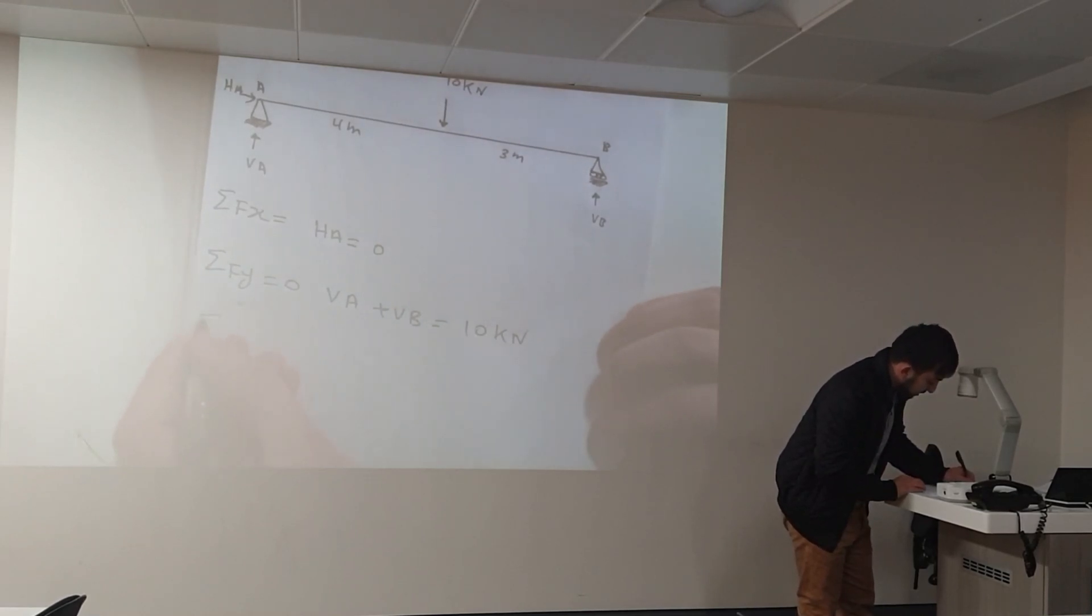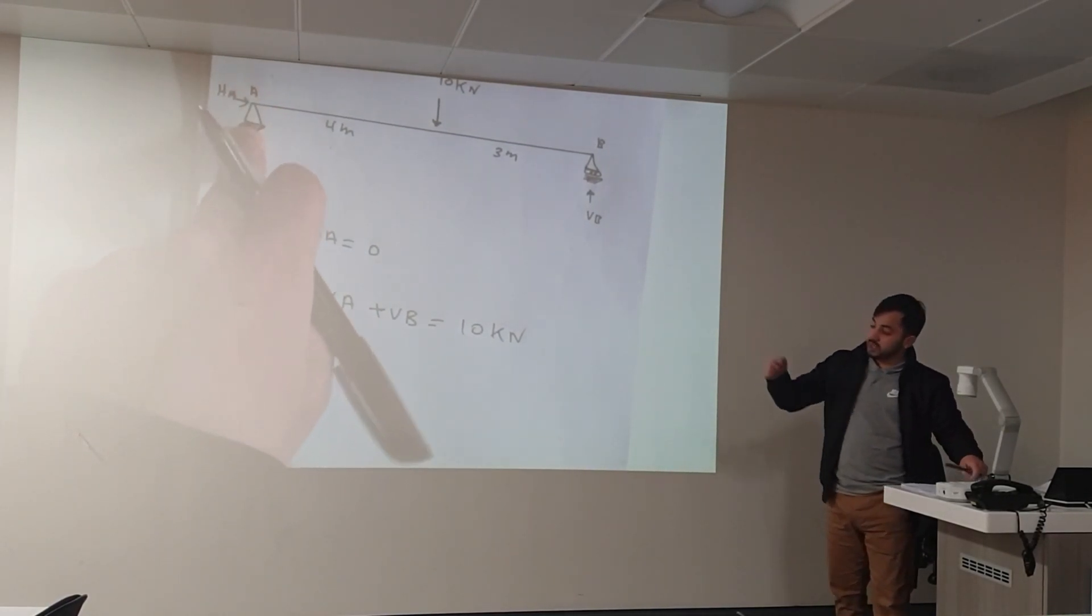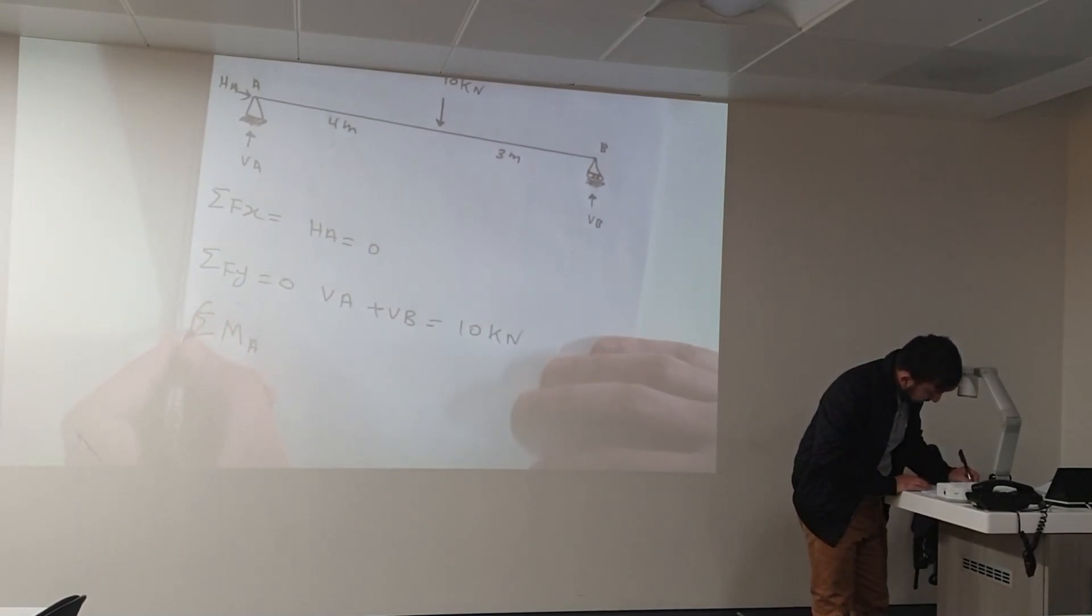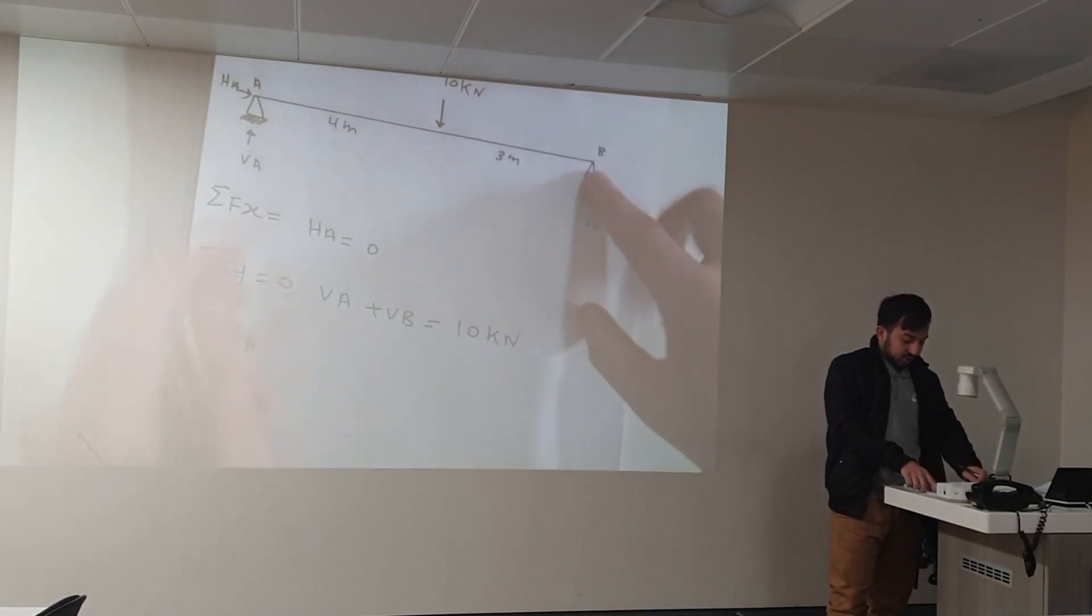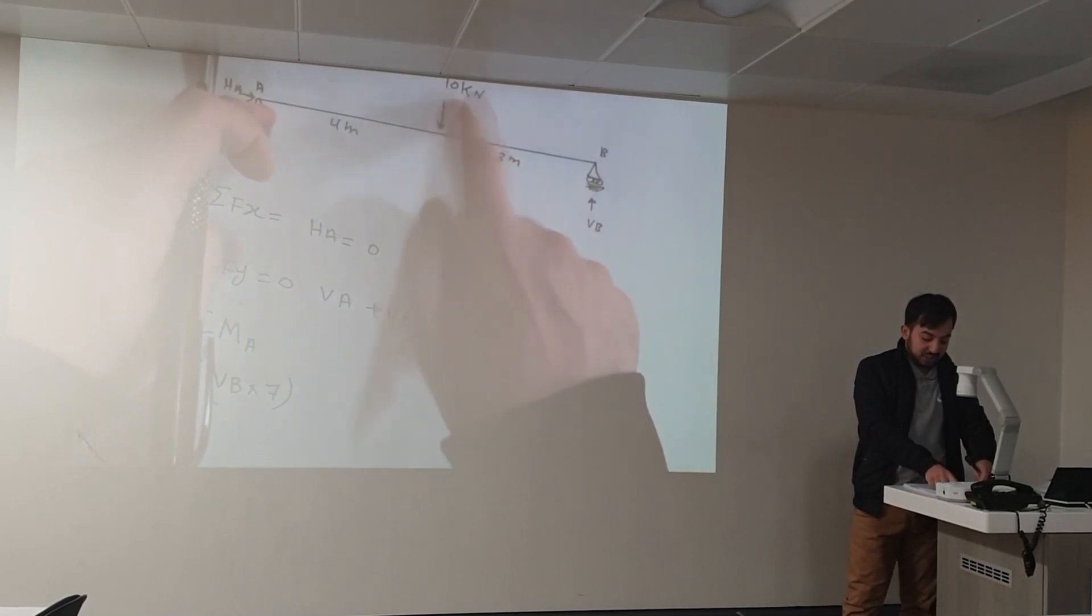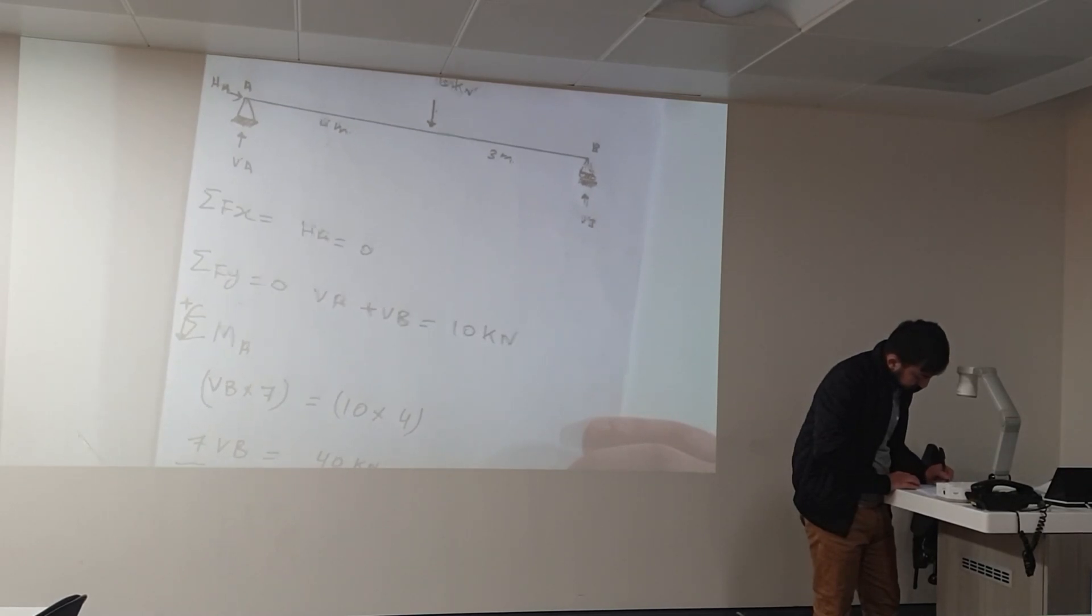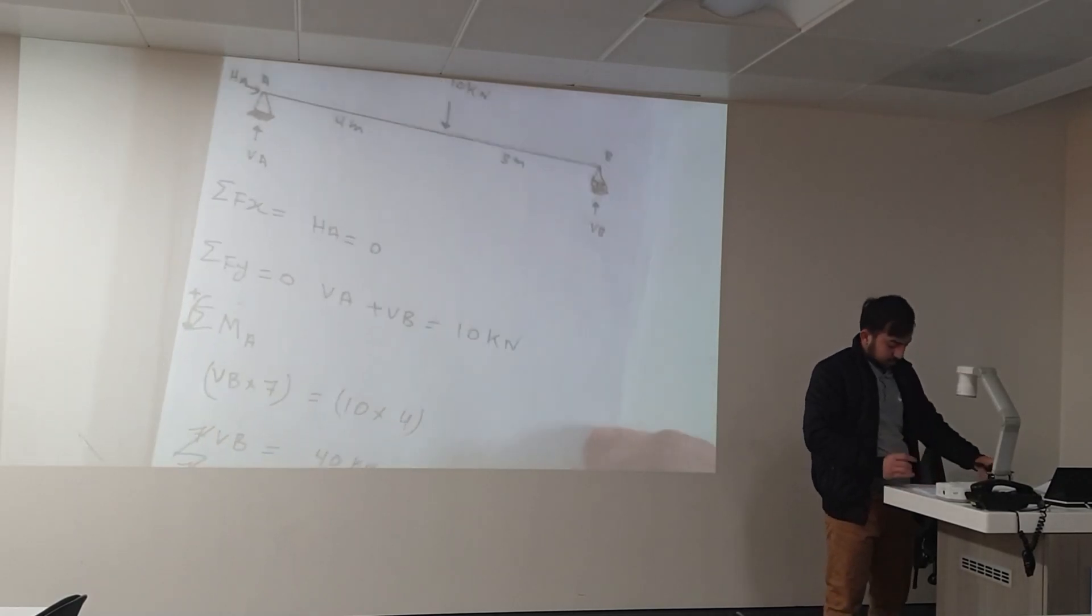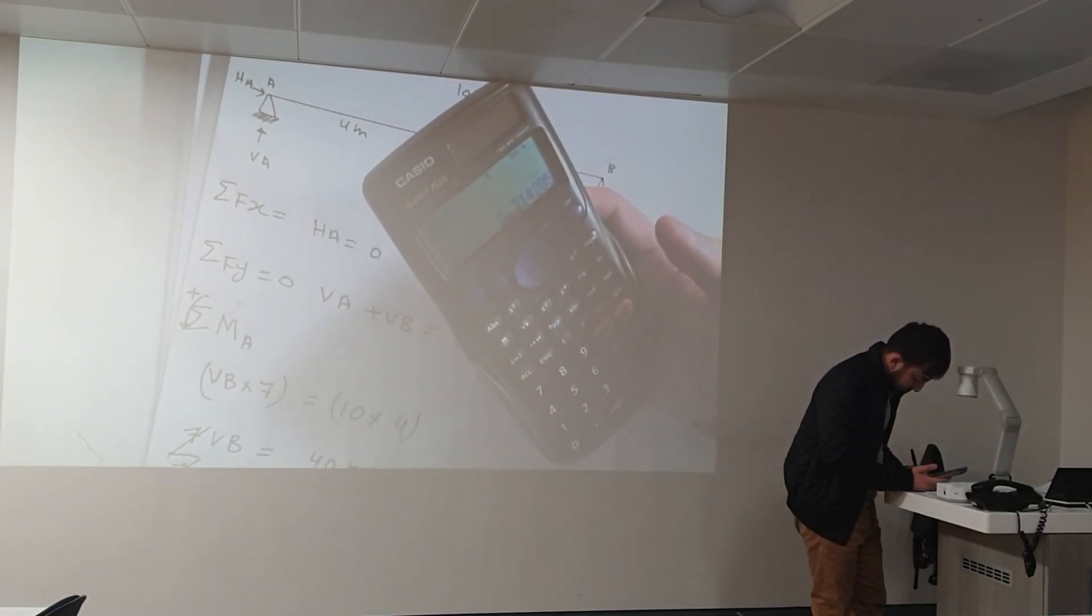So how should we find the value for VA and VB? To find this, we have to take a moment. You can take a moment at any point. I am taking a moment at point A and I am assuming anticlockwise positive. So VB times the total distance is 7. We have 10 kilonewton acting opposite to VB. So it equals 10 kilonewton times 4. So 7VB equals 40 kilonewton. Both sides divide by 7. So VB is equal to 40 divided by 7, which is equal to 5.7 kilonewtons.